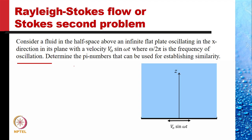Now, let us do a more complicated problem, known as Rayleigh-Stokes flow or the Stokes second problem in fluid mechanics. The problem situation is simple: we have a flat plate oscillating in a liquid which was initially not moving at all, and this plate is vibrating at a speed given by V naught sin(omega t) — with amplitude V naught and circular frequency omega.